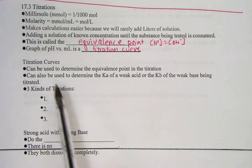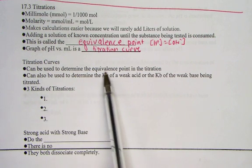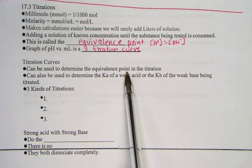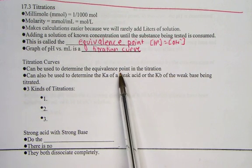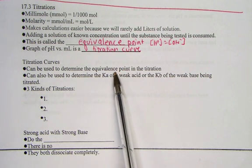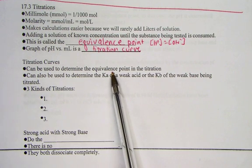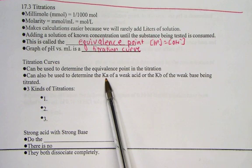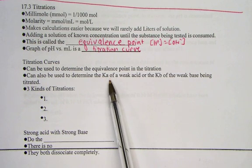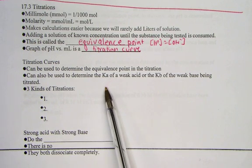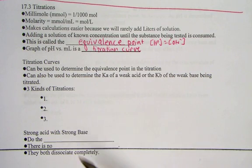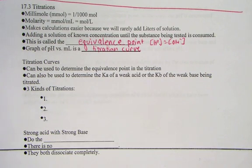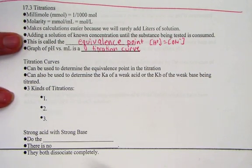So in a titration curve, we can use them for instance to determine the equivalence point. By simply looking at where the acid equals base ion, we can find the equivalence point of our solution. And they can also be used to determine the Ka of a weak acid, or a Kb for a weak base if they are indeed involved in the titration. So having said that, we will examine three varieties, three kinds of titrations in our notes.